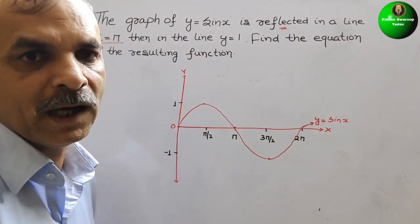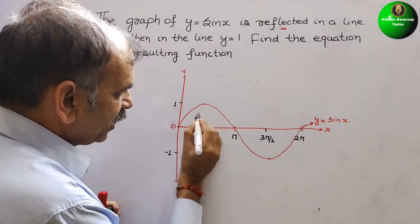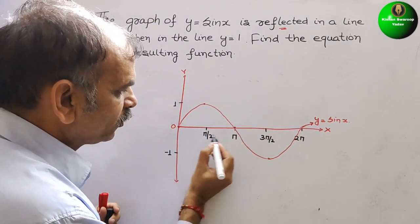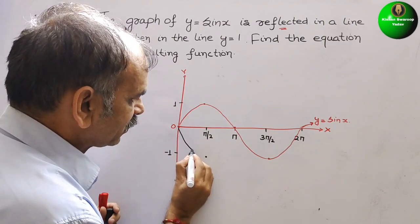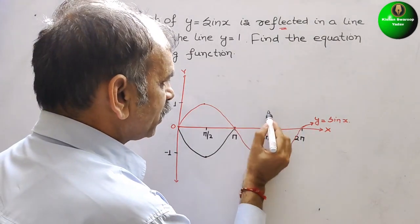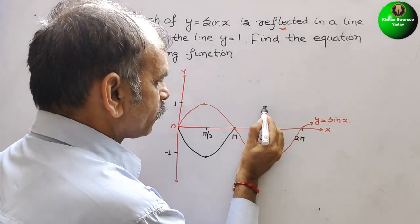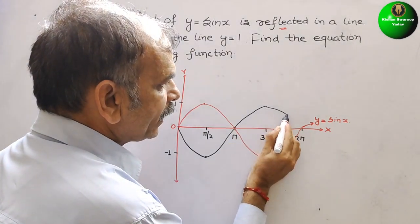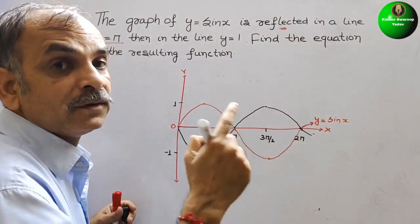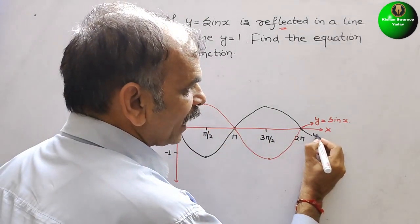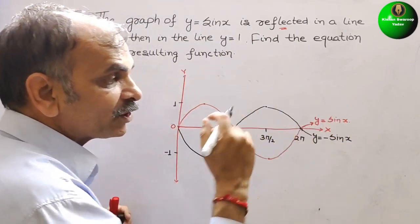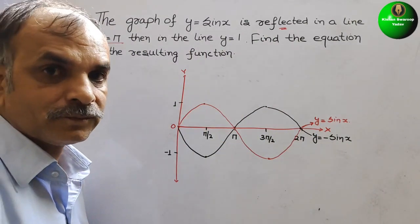So the first reflection will be like this: from here, instead of 1 it will come to minus 1, and instead of minus 1 it will go to plus 1. This is your reflection — that means it will be y equals minus sin x. That is the reflection, the negative of the original.